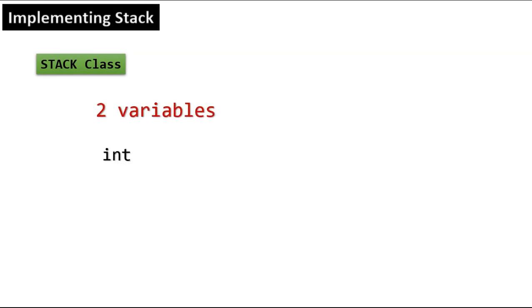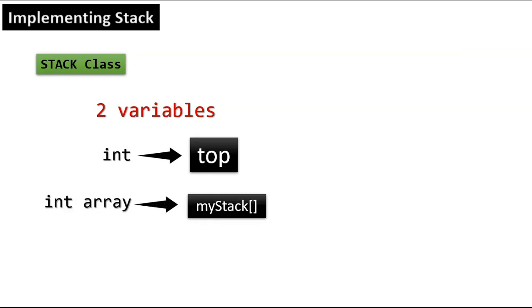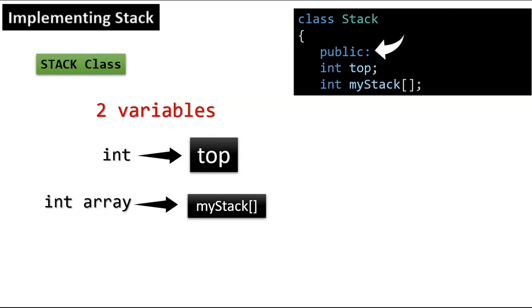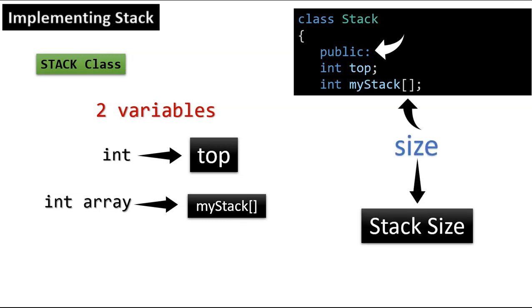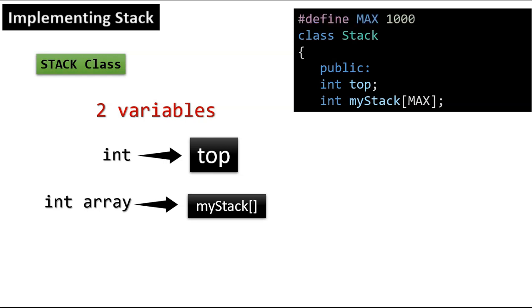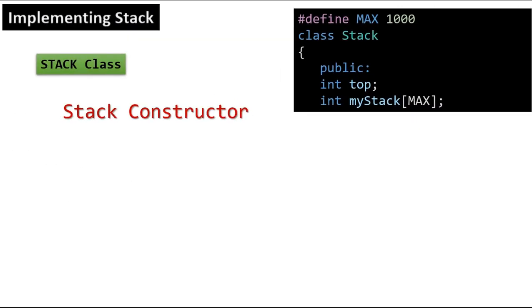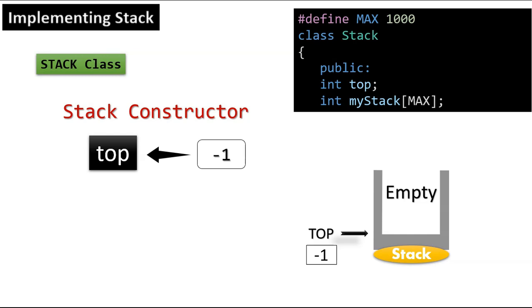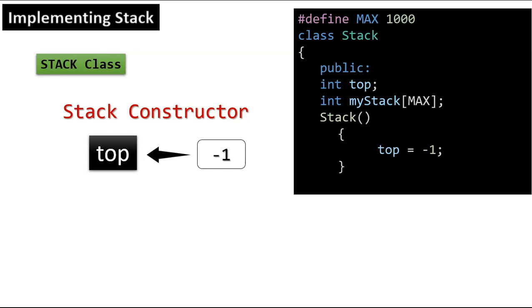The stack will be created as a class. In the stack class, we declare two variables: an integer array myStack of size MAX, where MAX is defined as 1000. Next, in the stack class constructor, we initialize the top value to -1 because the stack is initially empty. So, stack top equals minus 1.